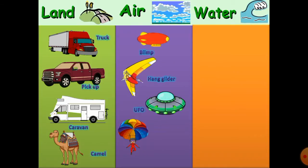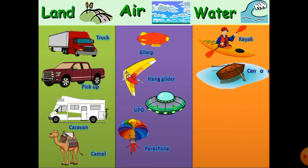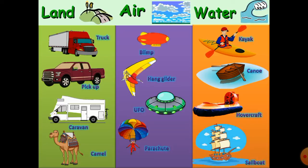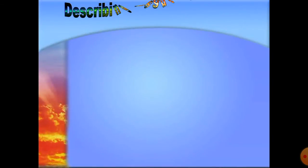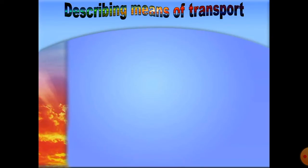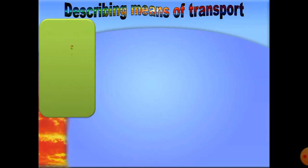For air travel we have plane, hang glider, UFO, and parachutes — UFO stands for unidentified flying objects. Of course if you want to go to Mars or other planets you need a special means of transport. For water we have a kayak, a canoe, a hovercraft, and a sailboat — maybe the one that Columbus used to discover America.